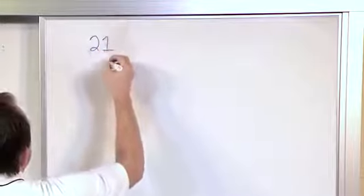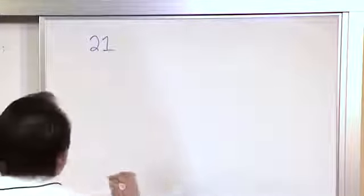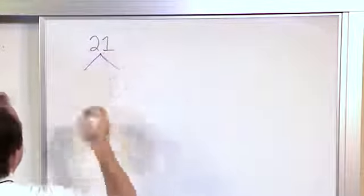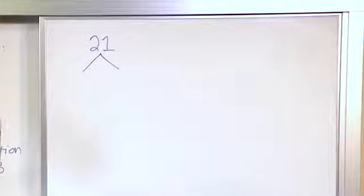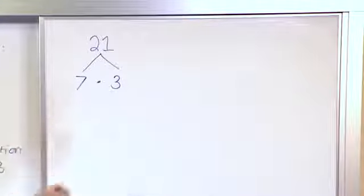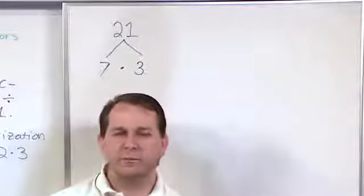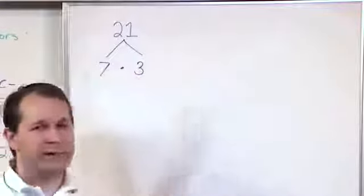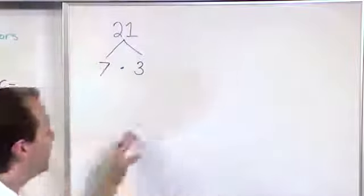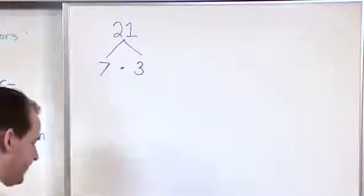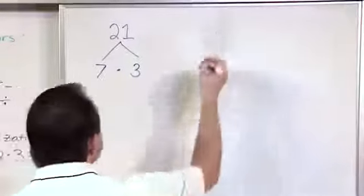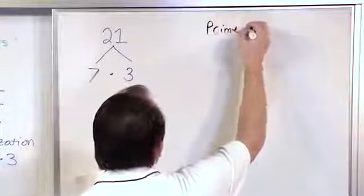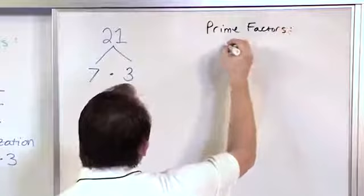Let's do another problem — maybe a simpler one. Let's look at the number 21 and find its prime factors. You say, what times what gives me 21? I'm thinking 7 times 3 is 21. Then we look at 7 and ask what times what gives us 7, and we realize the only thing is 1 times 7 — so 7 is prime. Same thing with 3 — you can't go any further, so it's prime also. So the prime factors of 21 are simply 7 and 3.